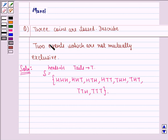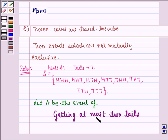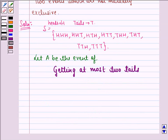So now, we have to tell 2 events which are not mutually exclusive. So let A be the event of getting at most 2 tails. That will be the events or the elements where we have 0, 1 or 2 tails.